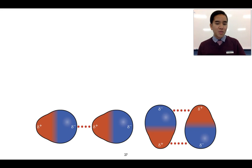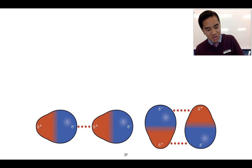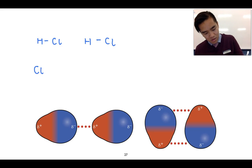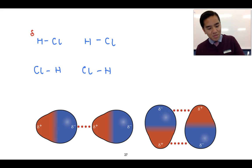These diagrams show how dipole-dipole interactions can form, but let's look at a specific example with hydrogen chloride. Drawing a few of its molecules, we want to show that HCl is a polar molecule. Hydrogen becomes partially positively charged as it unequally shares electrons with chlorine.